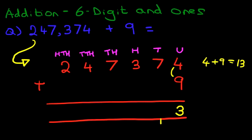We're now going to add the tens. We've got 7 here. We don't have anything here, but we do have 1 over here. So 7 plus 1 is 8.